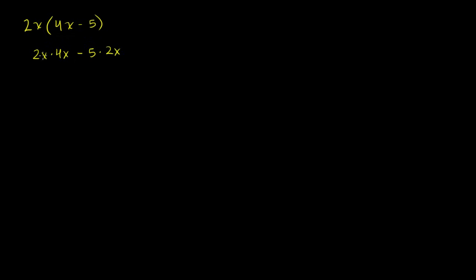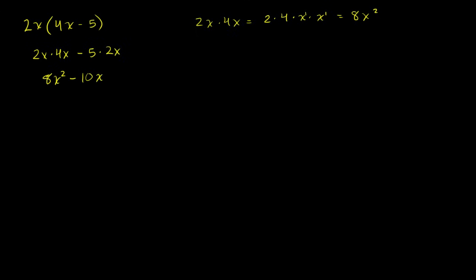This first term is going to be equal to — we can multiply the coefficients. 2x times 4x is the same thing as 2 times 4 times x times x, which is the same thing as 8 times x squared. X to the 1 times x to the 1 — add the exponents — so x times x is x squared. This first term is 8x squared, and the second term, negative 5 times 2, is negative 10x.